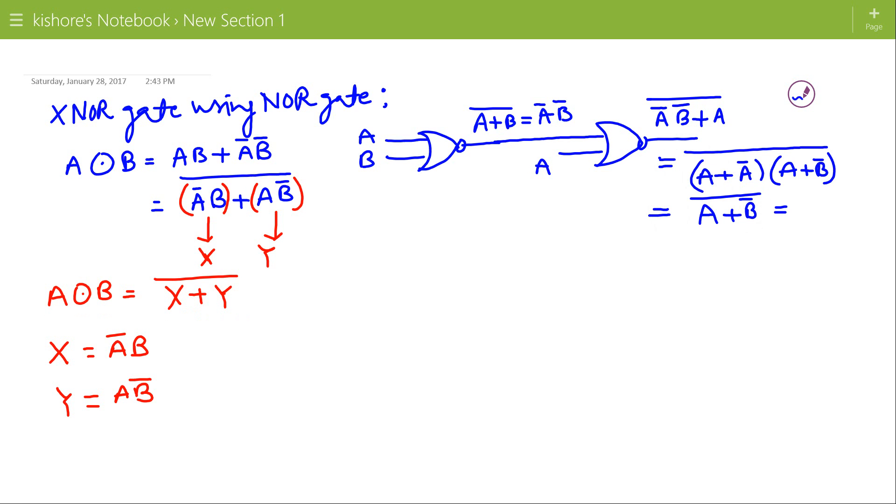A plus B bar complement is A bar B. So if I apply De Morgan's theorem, this will be A bar B, and we will realize X.